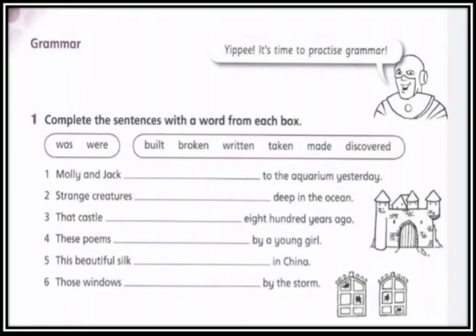Now let's start with the first exercise: complete the sentences with a word from each box. هنا أعزائي الطلبة سوف نقوم بإكمال الجمل الموجودة لدينا باختيار كلمة مناسبة من كل صندوق. بداية سوف نختار من الصندوق الأول الفعل المساعد المناسب للمفعول به الذي تم وضعه في بداية الجملة — إذا كان مفعول به مفرد نضع 'was'، وإذا كان مفعول به جمع نضع 'were' — ثم بعد ذلك نختار الفعل المناسب. لاحظ أن جميع الأفعال الموجودة لدينا هي بالتصريف الثالث.